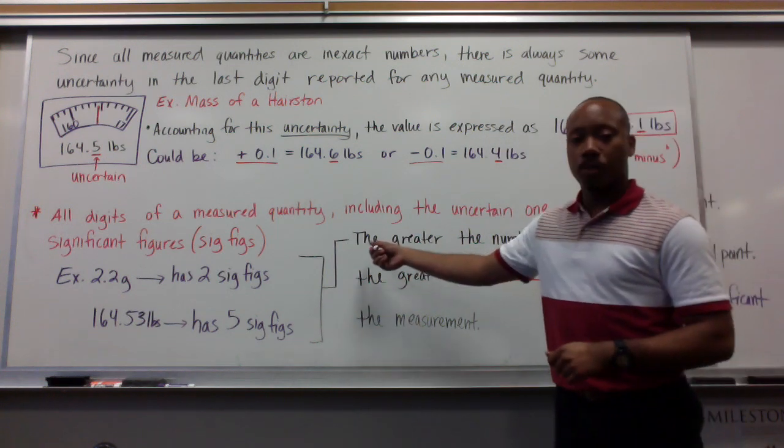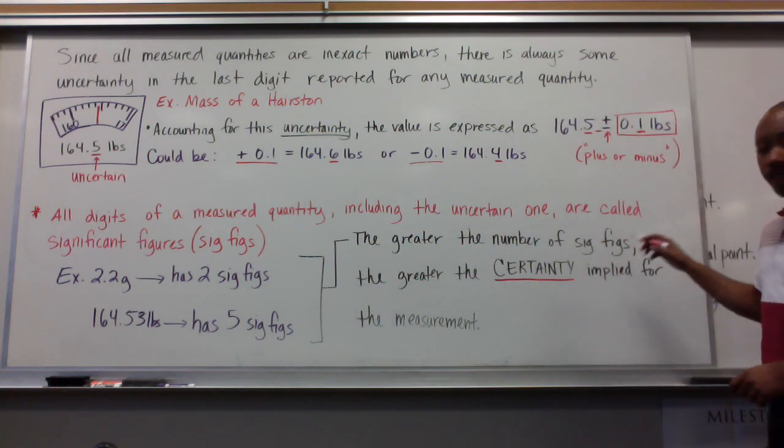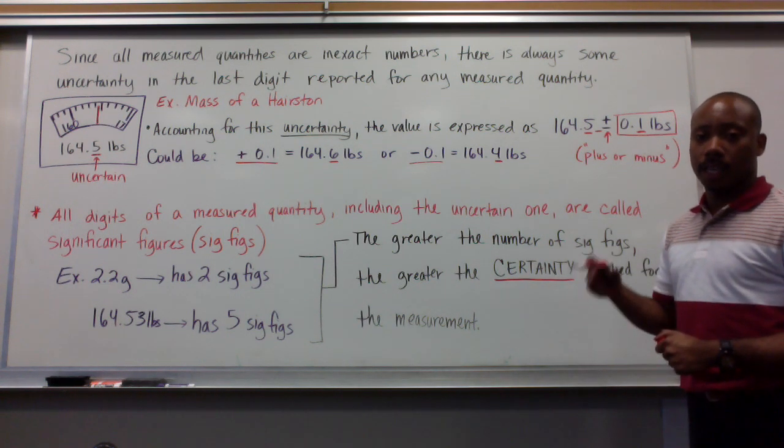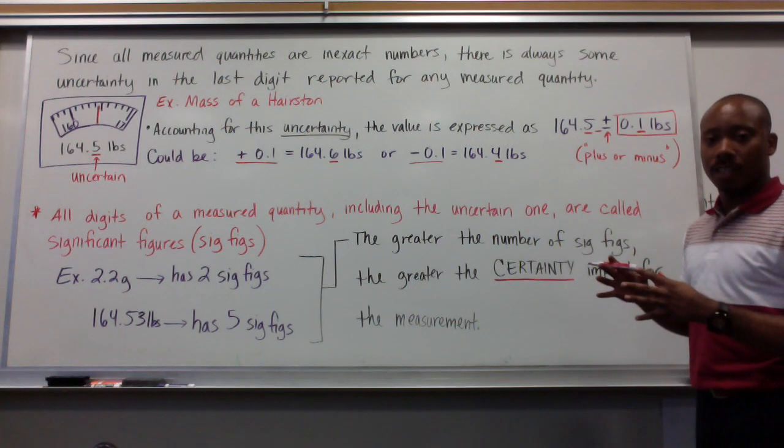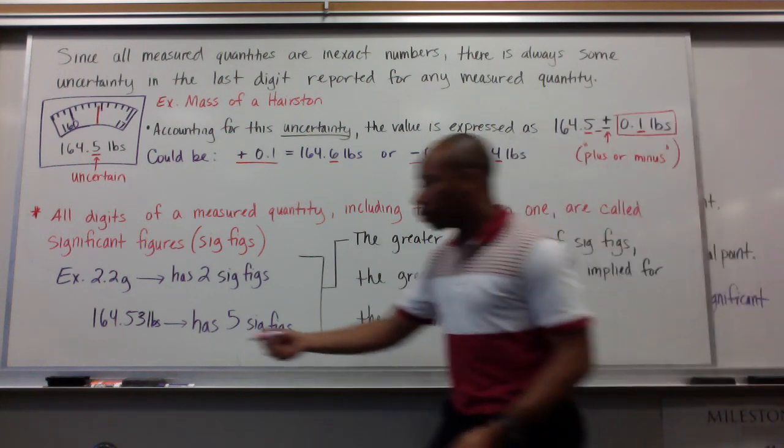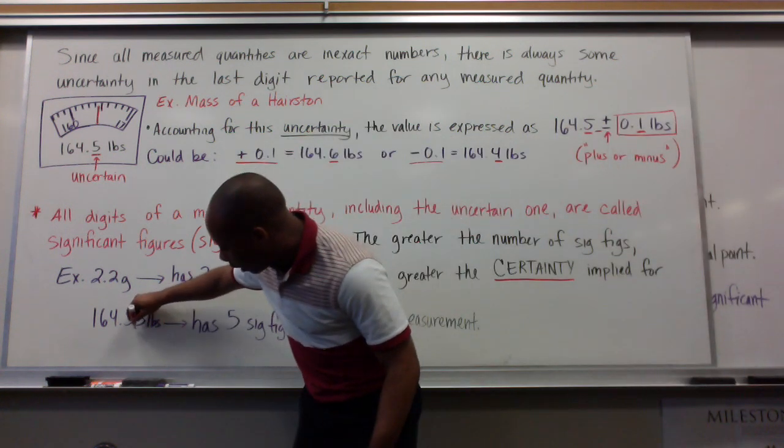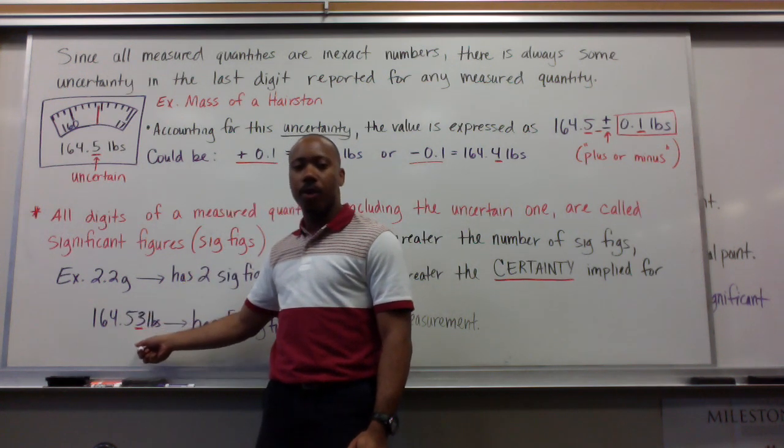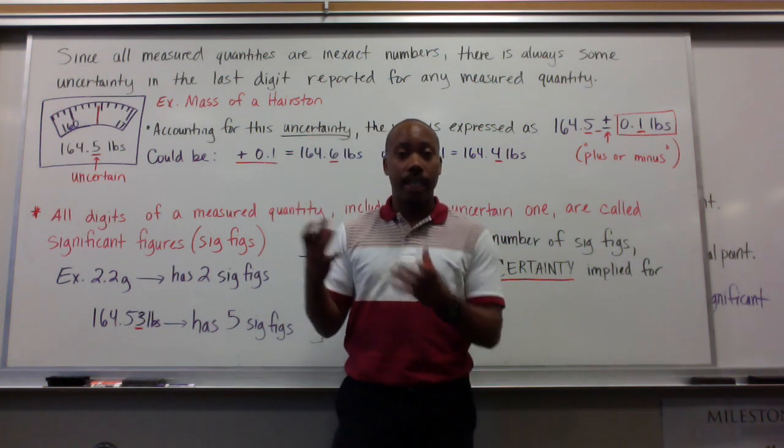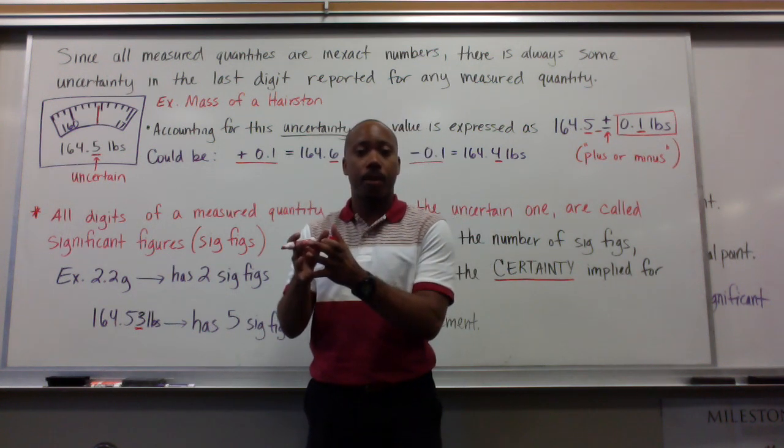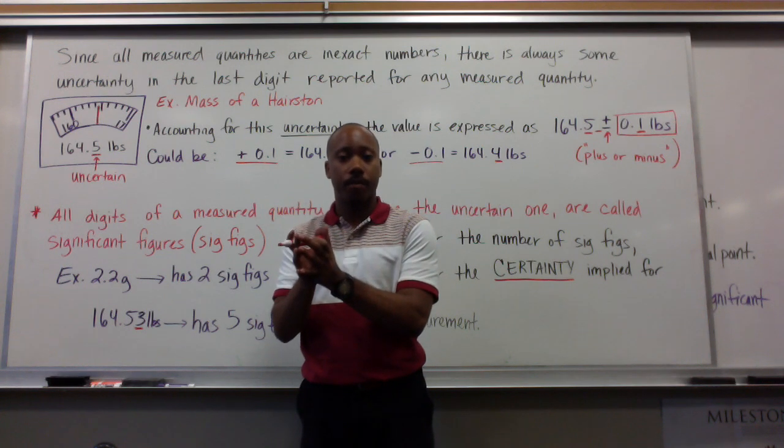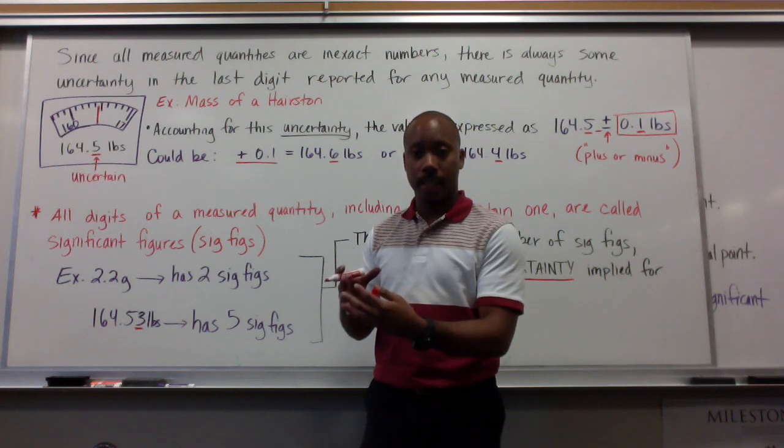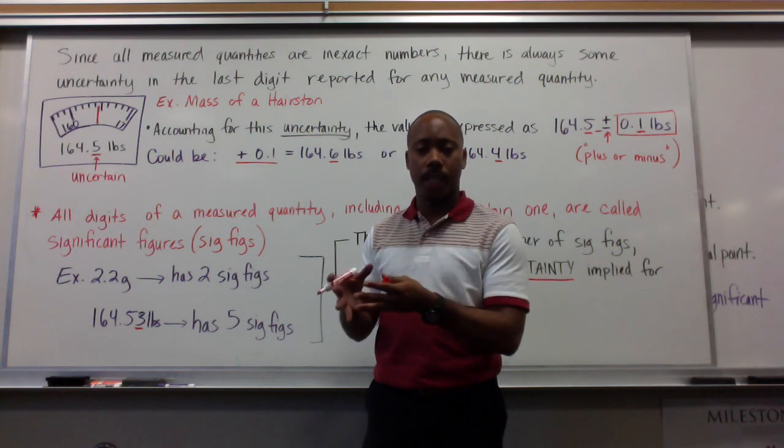Now, here's a special note. The greater the number of significant figures, the greater the certainty implied for the measurement is. So the more significant figures we have, the greater the certainty. So we're certain out until that last value that that's the number, that that's the precision of the number. That's the accuracy of that number. So the greater number of significant figures, the greater the certainty or the precision we could even think of.